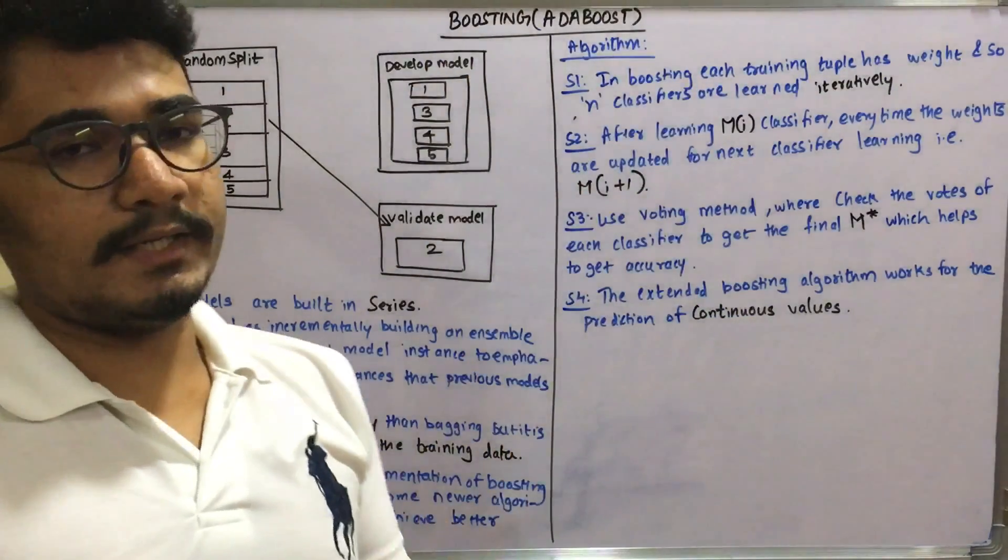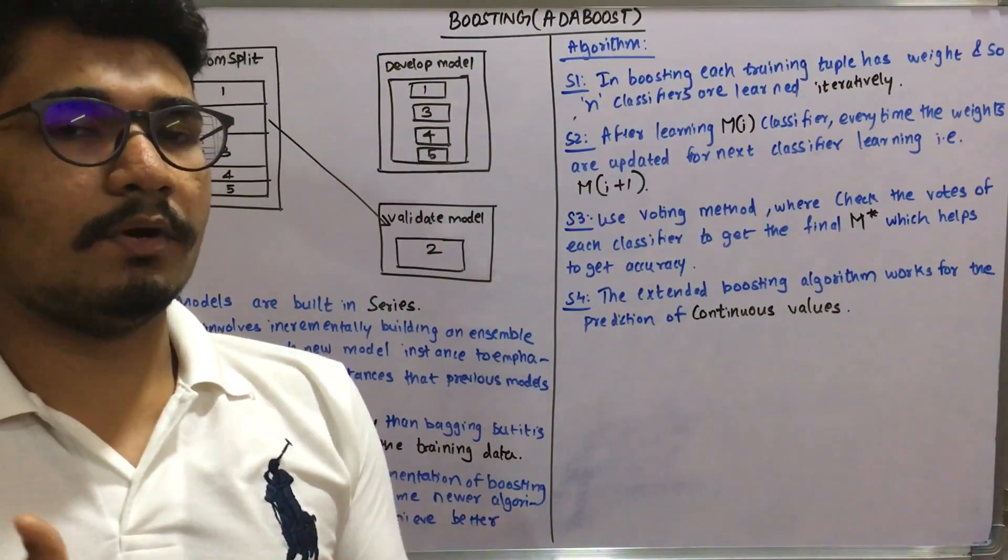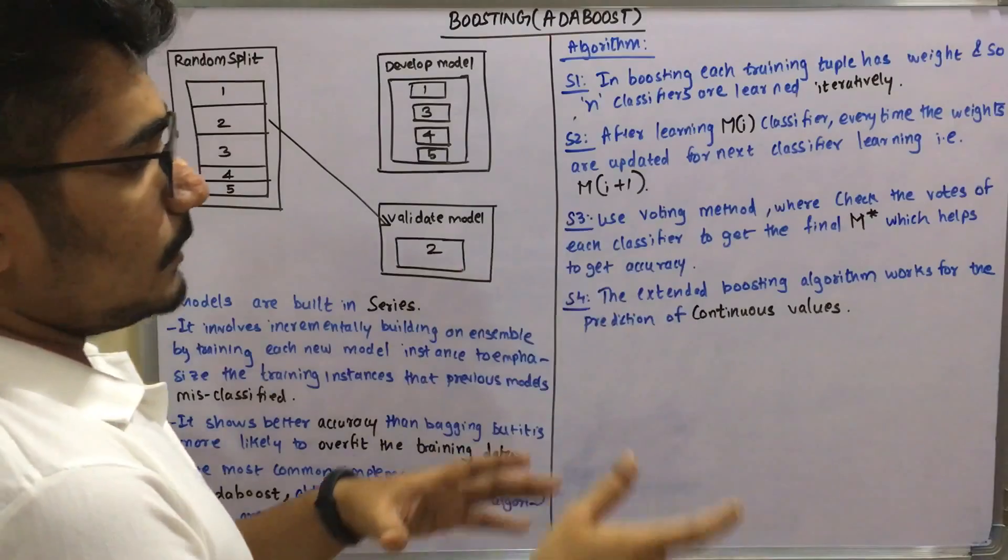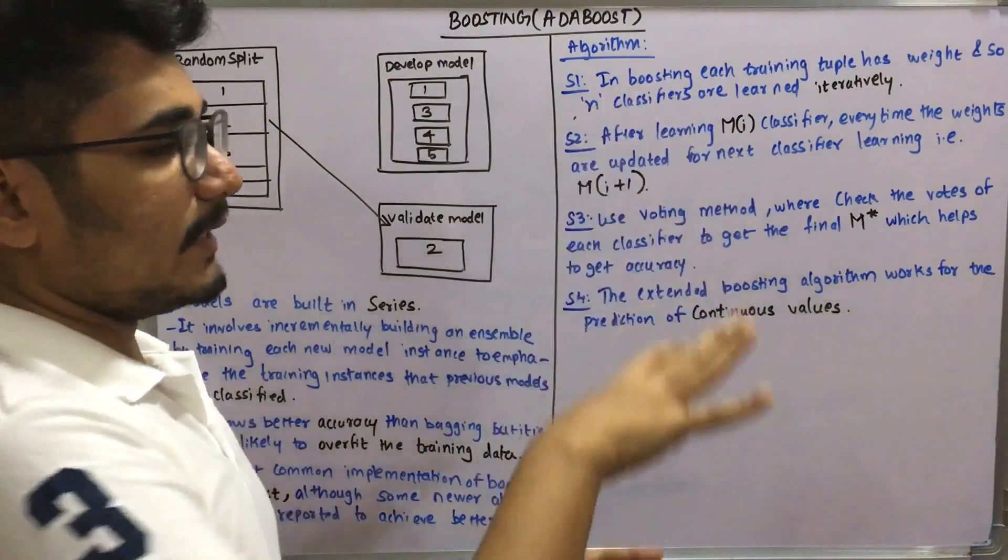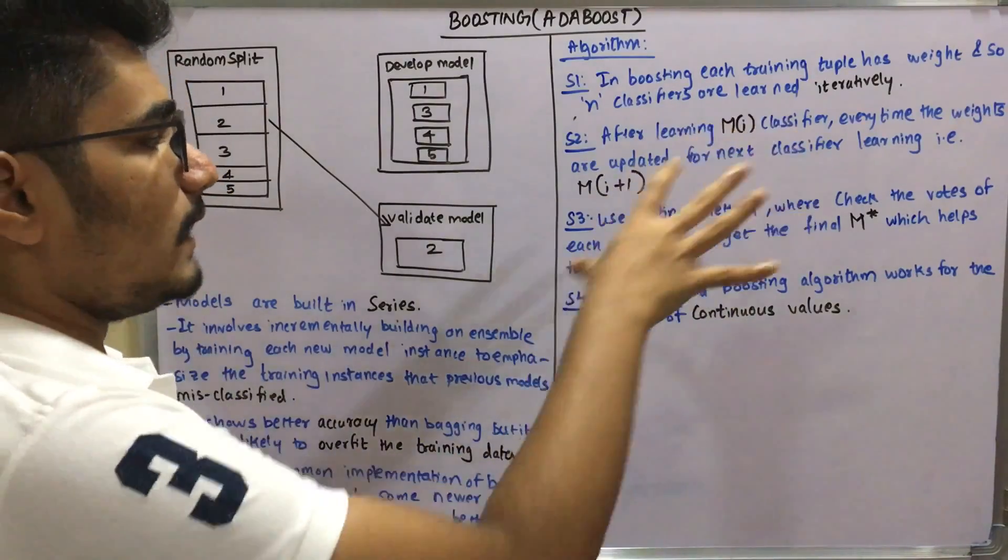Next, by using the voting method we check whether the votes of each classifier get the final M* value which helps them to get the accuracy.